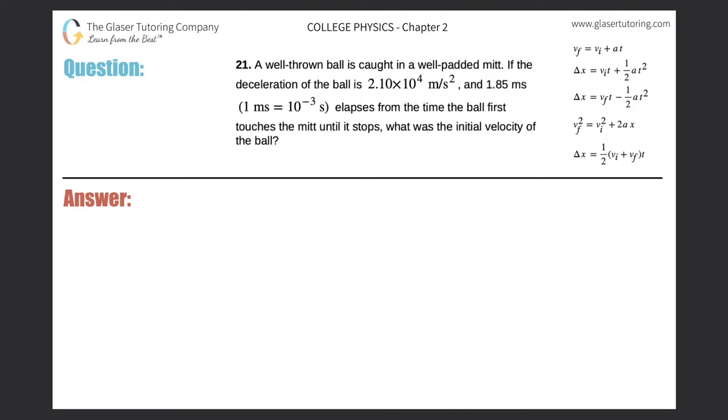Number 21. A well-thrown ball is caught in a well-padded mitt. If the deceleration of the ball is 2.1 times 10 to the 4 meters per second squared and 1.85 milliseconds has elapsed from the time the ball first touches the mitt till it stops, what was the initial velocity of the ball?